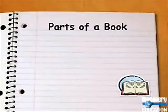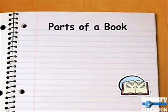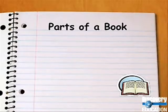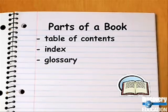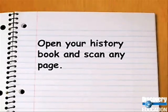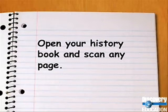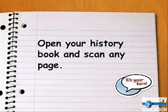Knowing the parts of a book can help you figure out where to look for information. The parts of a book include the table of contents, the index, and the glossary. Open your history book and scan any page. When you find a word you don't understand, look it up in the glossary.